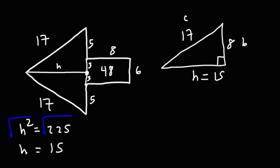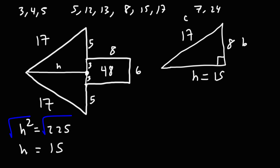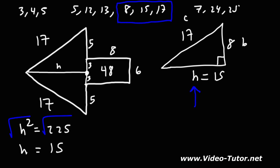If you know your special right triangles, you can quickly determine this answer. There's the 3-4-5, the 5-12-13, the 8-15-17, and the 7-24-25 right triangle. Knowing these, you can easily determine that if a right triangle has sides of 8 and 17, the missing side will be 15.